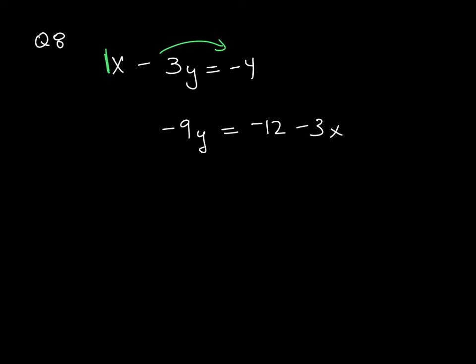And that will give me, I do that by adding 3y to both sides, and that gives me x is equal to positive 3y minus 4. Now, wherever I have my x, I replace it with everything on the inside here. So let's go ahead and do that and replace that with my x.